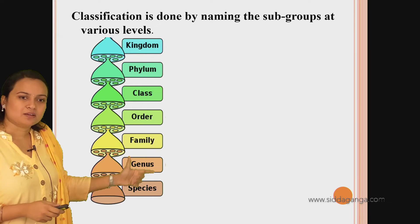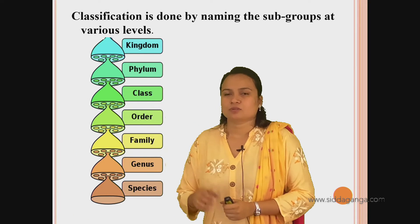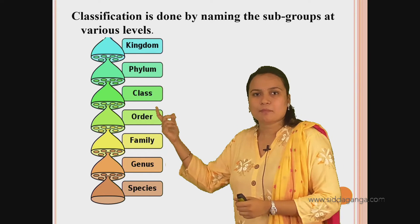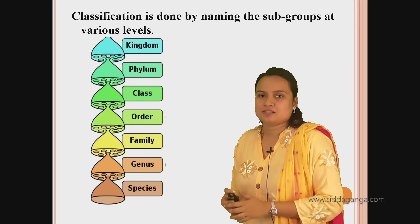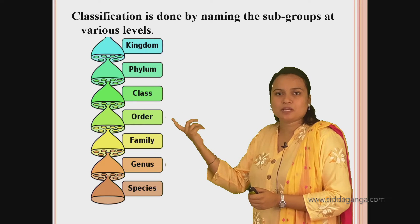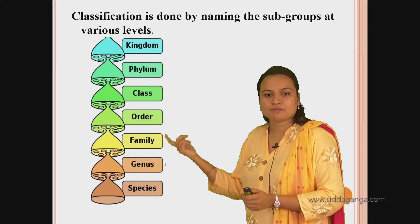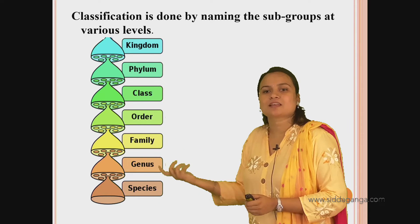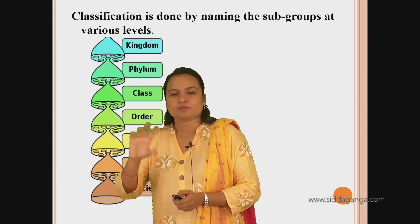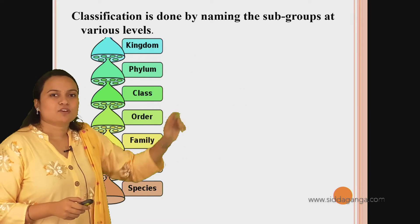To remember this sequence, here is a trick: KPC of GS. K is kingdom, P is phylum, C is class, of stands for O - order, F - family, and GS stands for genus and species. So KPC of GS - you can write the sequence easily.